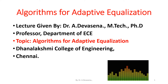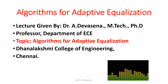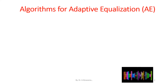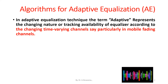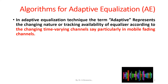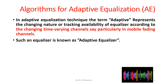Good morning, I'm Devisena. In this lecture we are going to discuss about algorithms for adaptive equalization in detail, including the zero forcing algorithm. In adaptive equalization technique, the term 'adaptive' represents the changing nature or tracking availability of the equalizer, according to changing time-varying channels, particularly in mobile fading channels. Such an equalizer is known as an adaptive equalizer.